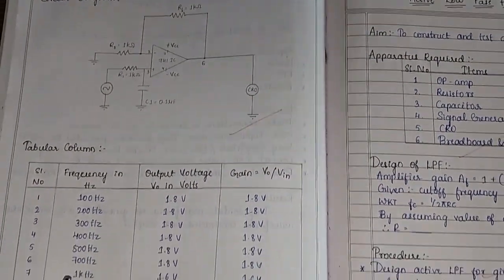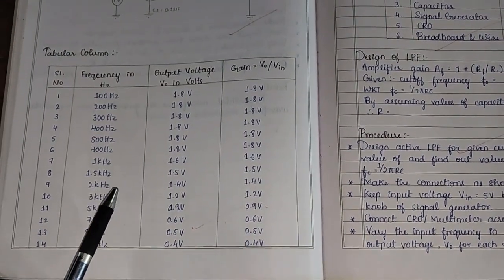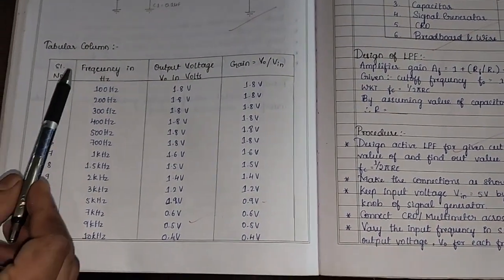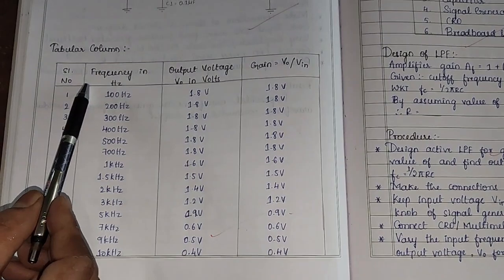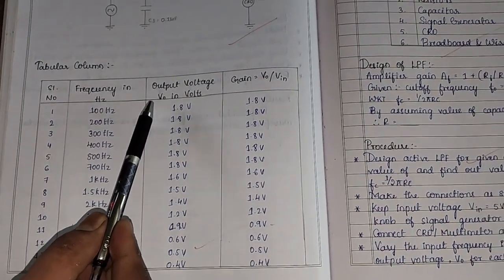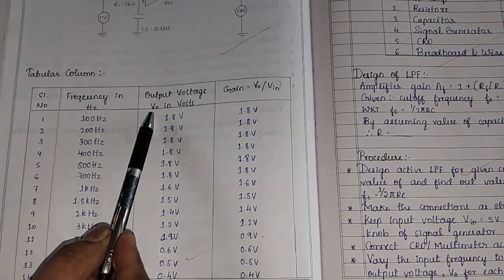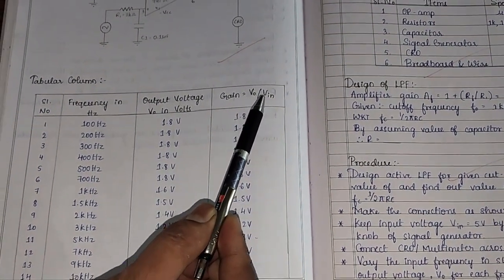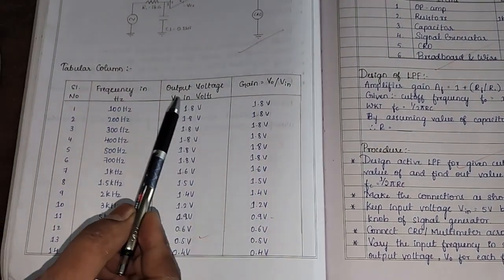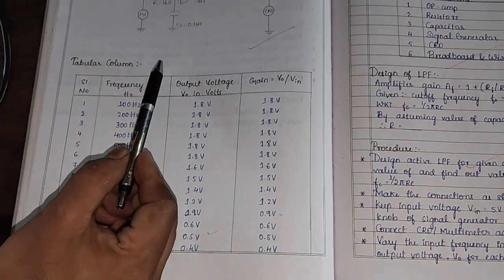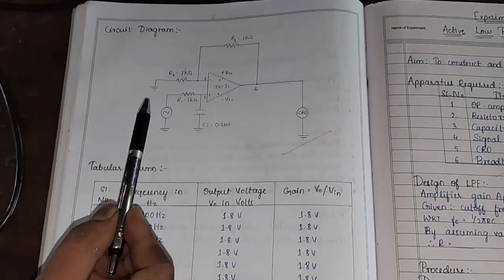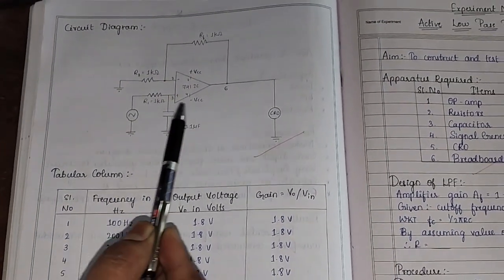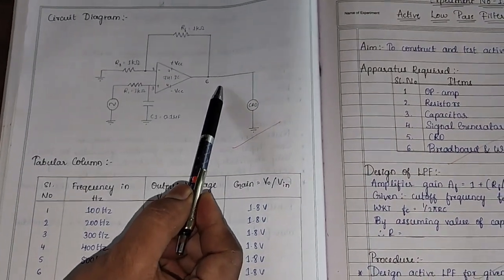These are all the sample readings which we have already taken. In this tabular column we can observe that we are applying the frequency in Hertz and measuring the output voltage at pin number 6, and calculating the gain, that is V0 divided by Vin. We apply the input voltage as 1 volt and change the frequency, while observing the output at pin number 6.